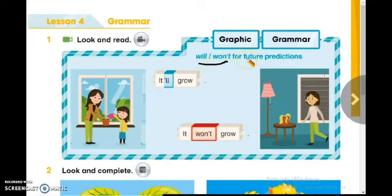We use will/won't to talk about future predictions. This double L means will, and this one is the negative form from will which is won't. Now my dear students, let us see this graphic.